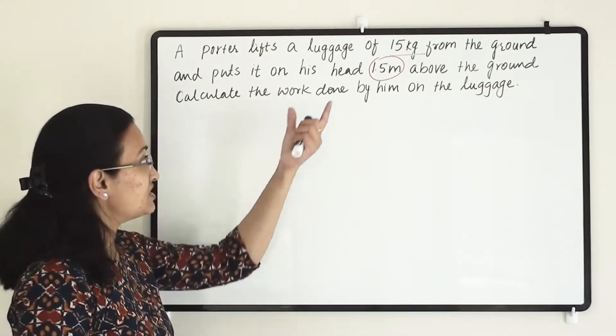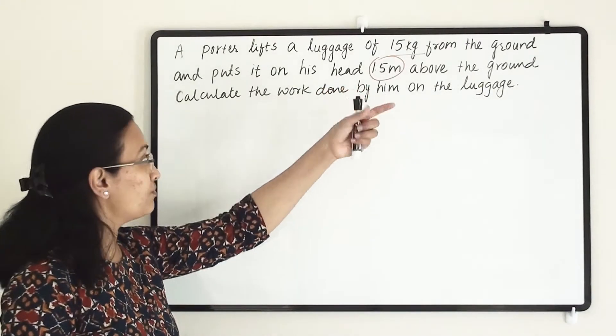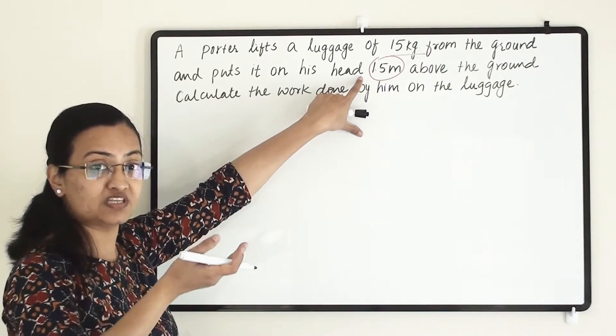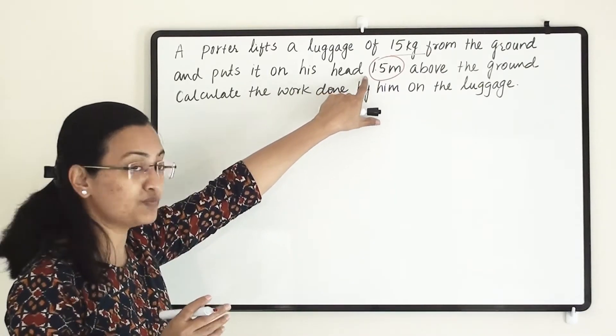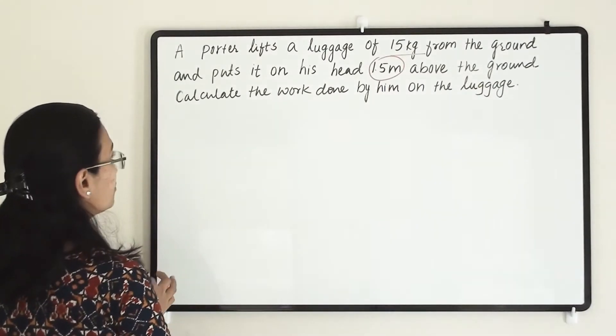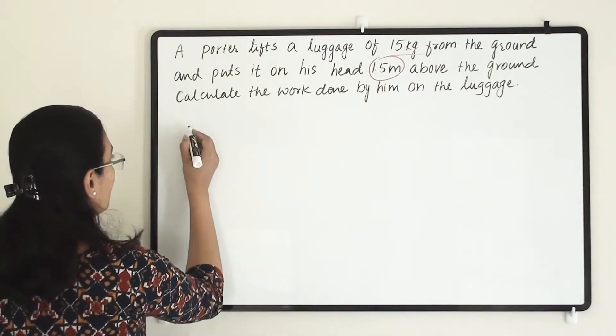So this much is the mass given for the object and this much displacement has been done. He lifts it and puts it on the head. So this much displacement has been done. This is a distance. So let us note down what all things do we have here.